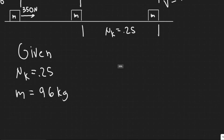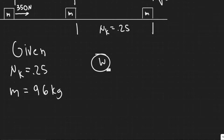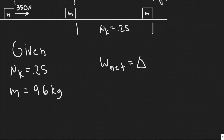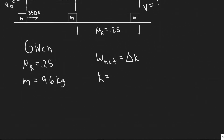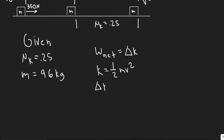We're going to solve this using the work-energy theorem, which tells us the net work done, W-net, is equal to the change in kinetic energy. The formula for kinetic energy is one-half mv-squared, so the change in kinetic energy is one-half mv-final-squared minus one-half mv-initial-squared. Mass and one-half are constants, so the only thing changing is velocity, giving us the change in kinetic energy.